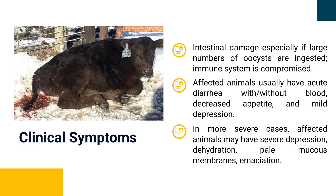Clinical symptoms include intestinal damage, especially when large numbers of oocysts are ingested. Affected animals usually have acute diarrhea with or without blood, decreased appetite, and mild depression. In more severe cases, affected animals may have severe depression, dehydration, pale mucous membranes, and emaciation.